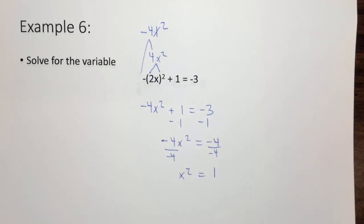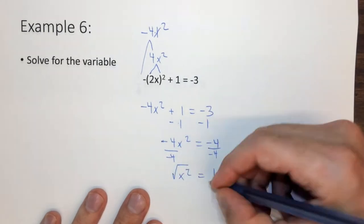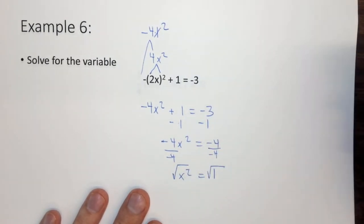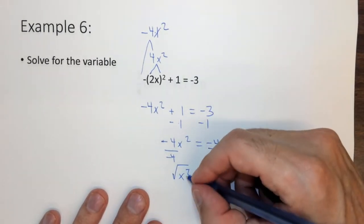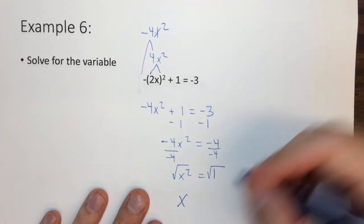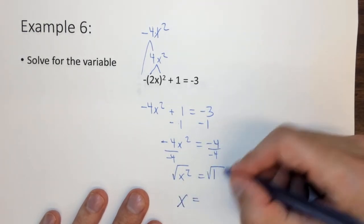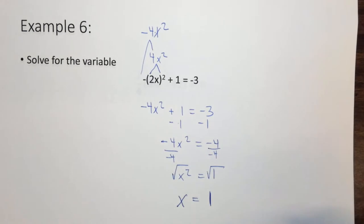Well how do we get rid of the x squared? To get rid of the x squared, we take the square root. When we do that, x squared, the square root of it, is just x. And the square root of 1 happens to be just 1.